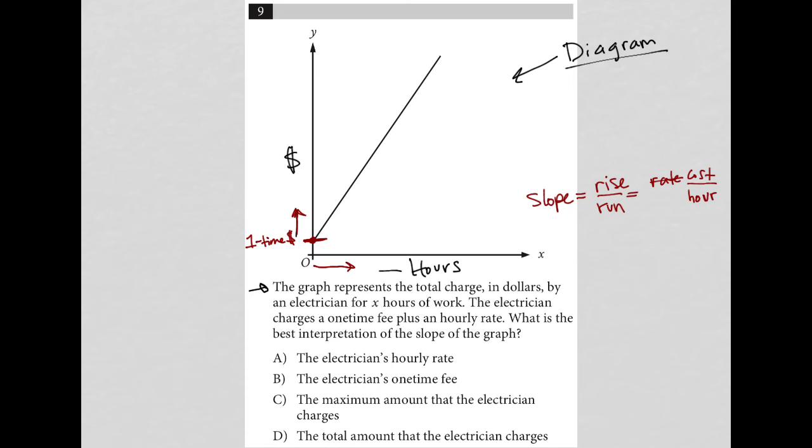So looking at the answer choices, choice A says the electrician's hourly rate. I like that as an answer. Choice B, the electrician's one-time fee. No, that would be the y-intercept. That's the one-time fee right there.